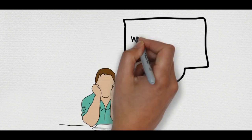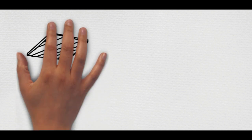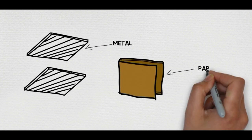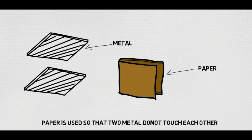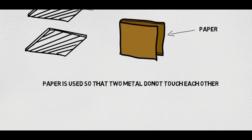But what's inside of this? Inside of this it contains basically two pieces of conducting material like metal separated from each other with a piece of paper. The paper is used so that the metal doesn't touch.